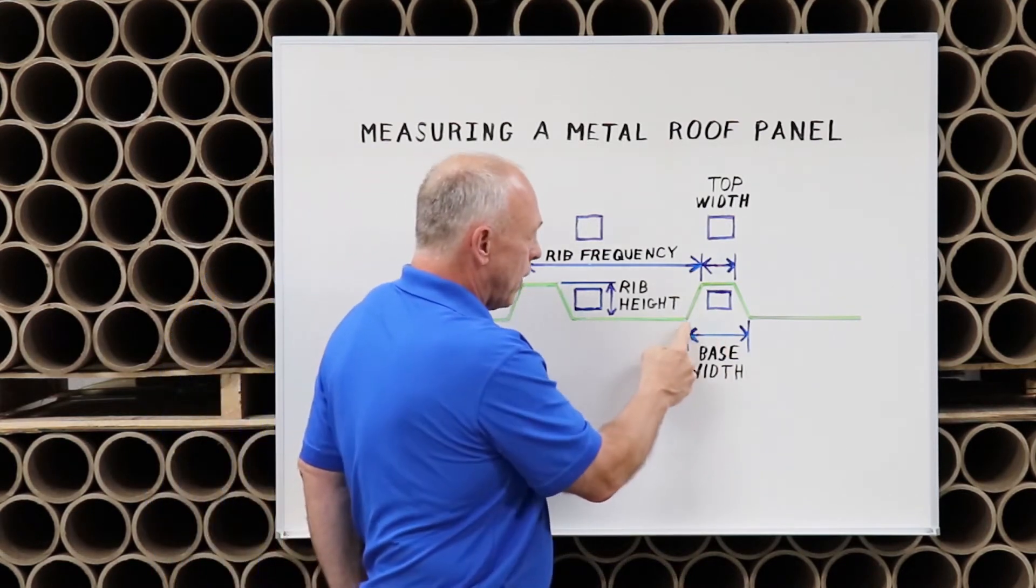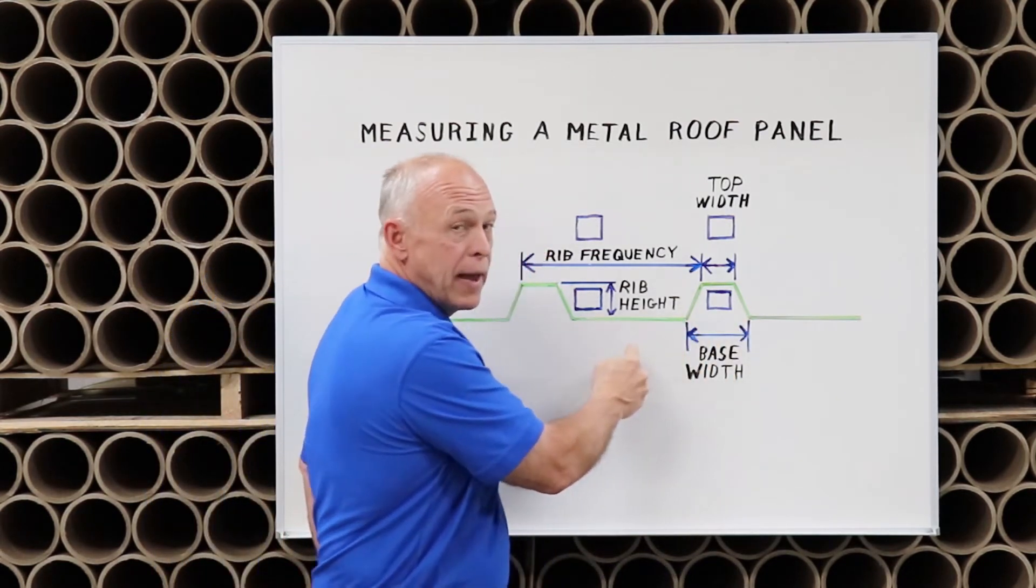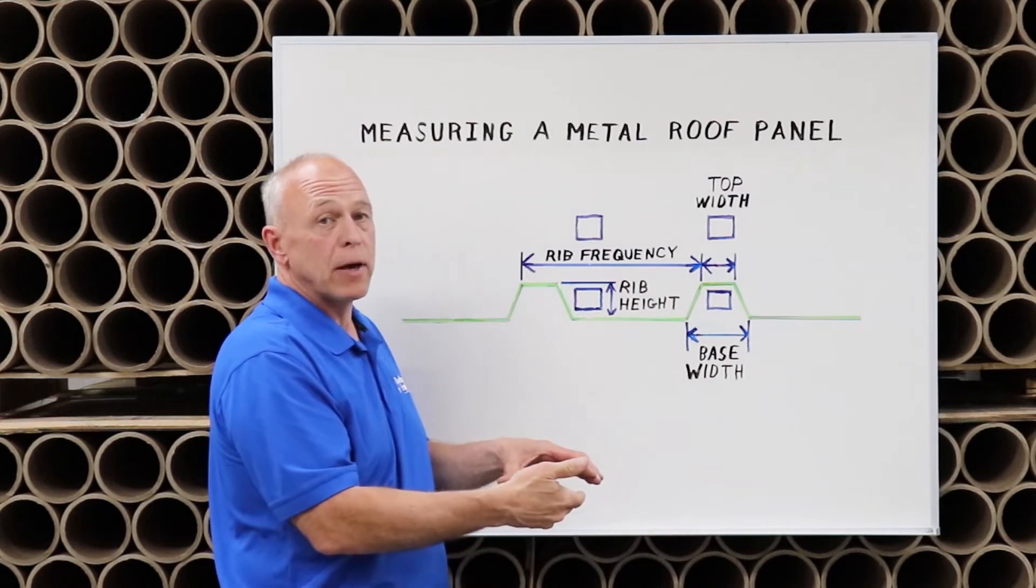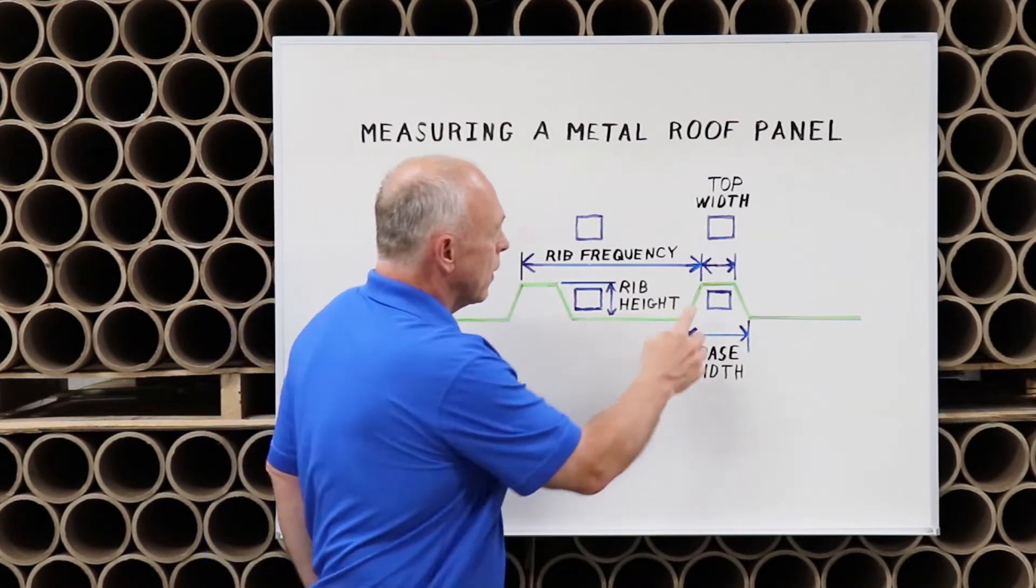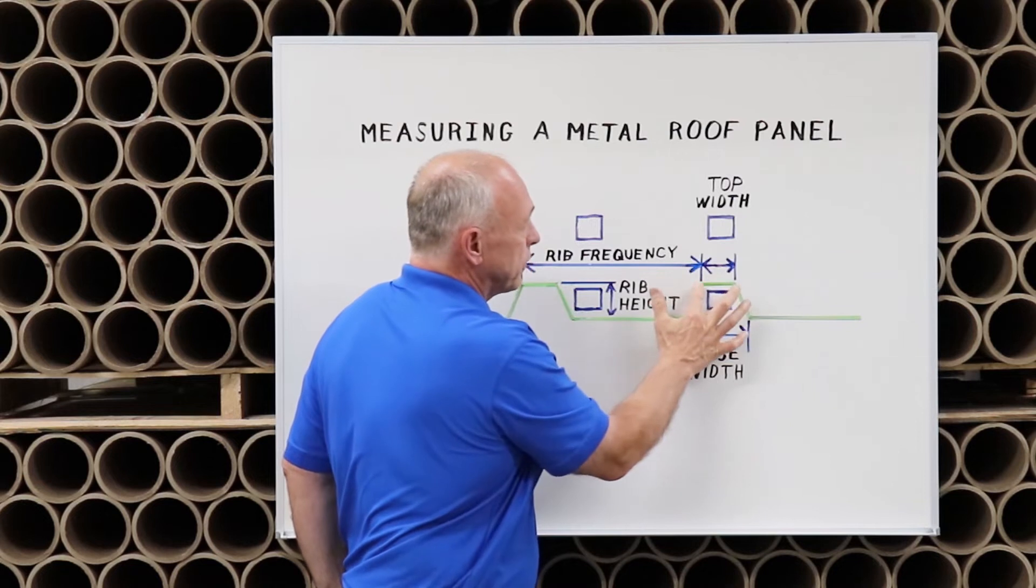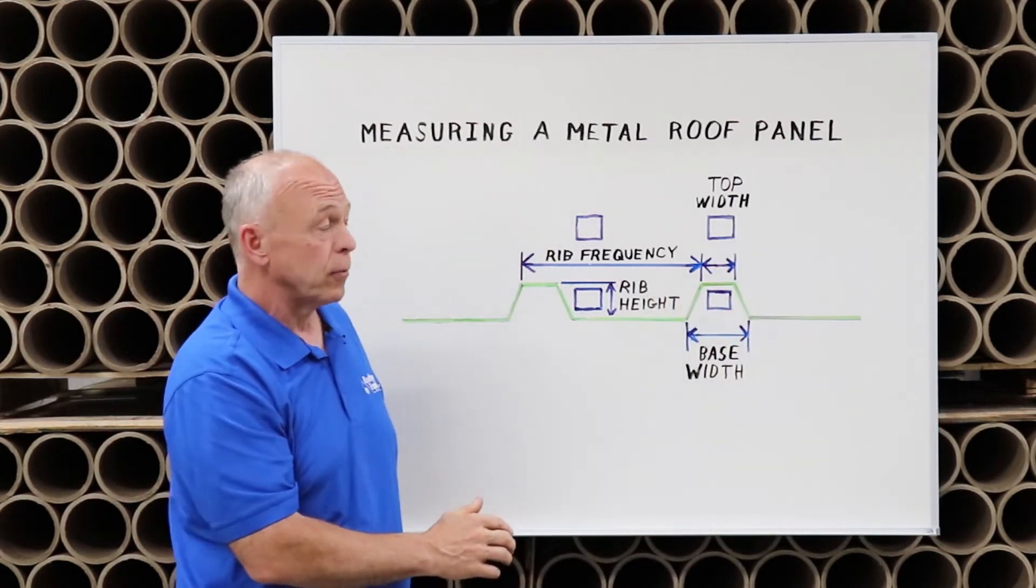Secondly is the base width, the distance across the very base of the rib. You may need to measure this at the gutter of the roof. Third is the top width, simply the distance across the top of the rib.